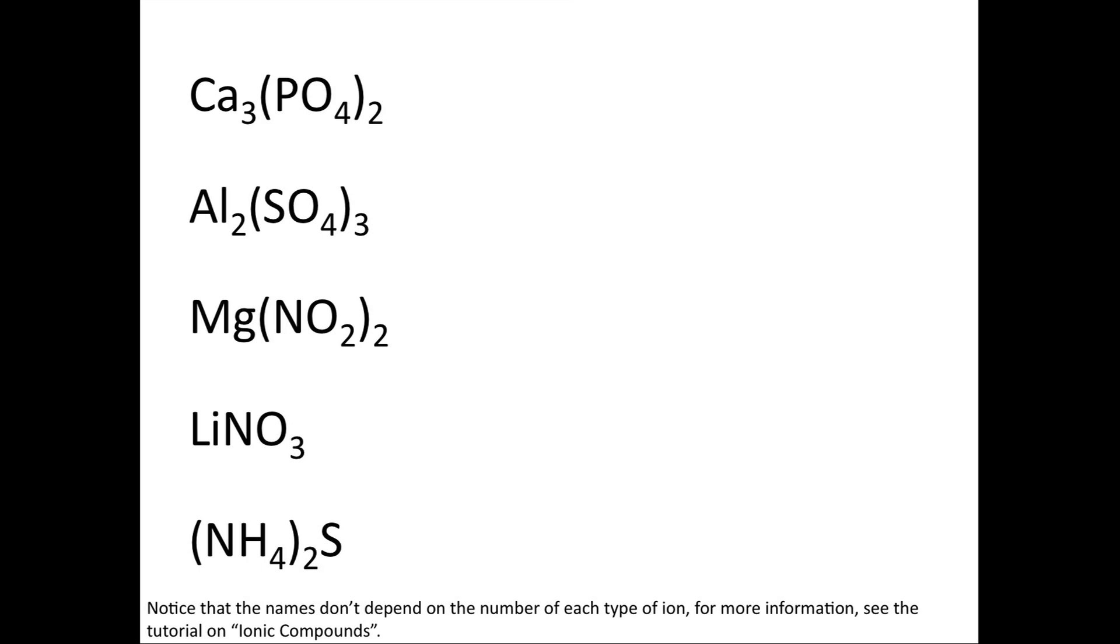Okay let's practice naming some ionic compounds that include polyatomic ions. Looking at the first formula we have Ca3 and then PO4 subscript 2 in parentheses. The cation would be calcium, and it gets to keep its name because it's a monatomic cation. Polyatomic ions never change their name, so you would have phosphate because PO4 is the phosphate ion.